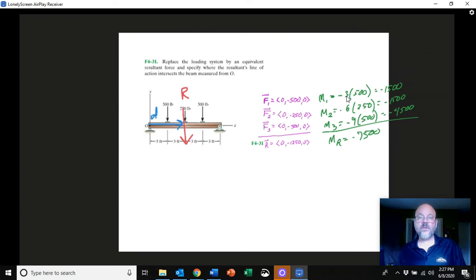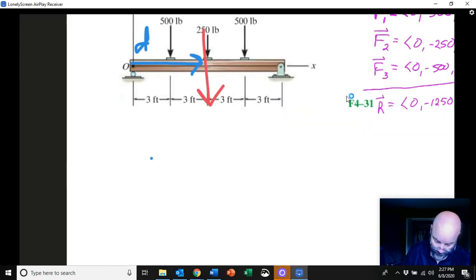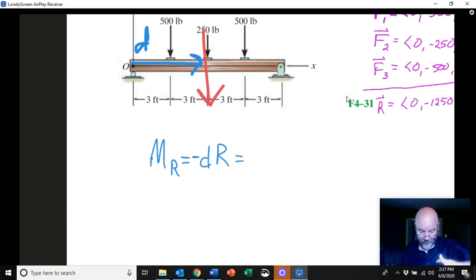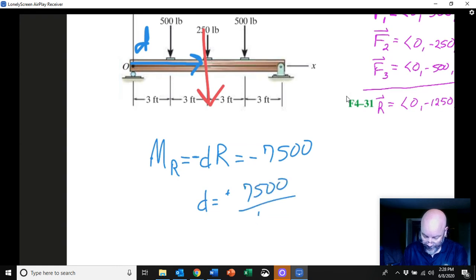And we want, really our goal is to figure out where to put R. So what value of D will give us the same moment that we had with all of the forces in there. And so we're going to do something like this, make it a little bit bigger here. So when I say we want MR to be D onto R and it's going to be negative given the direction of D and R, and so that's got to work out to be 7500. And so our D then will be, the negative signs cancel of course, so we get 7500 divided by 1250 which is six feet.